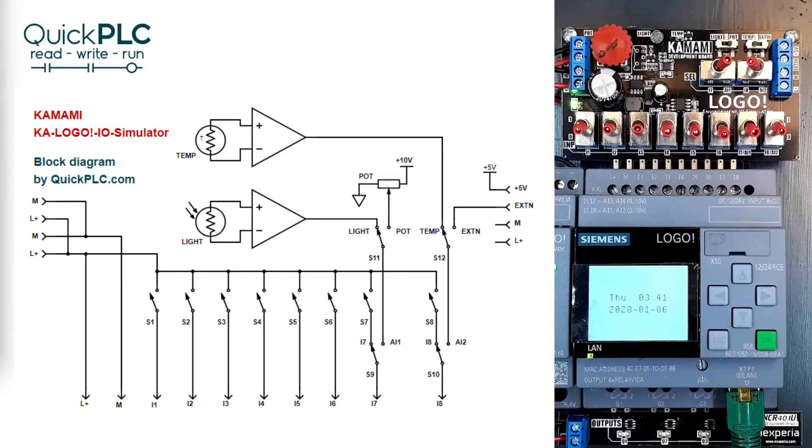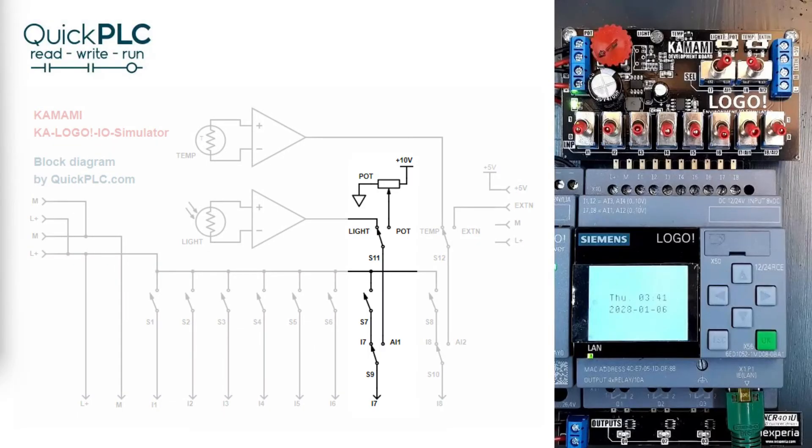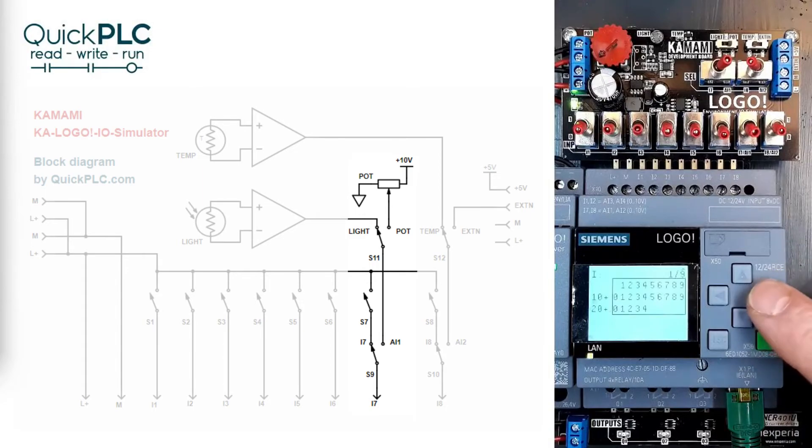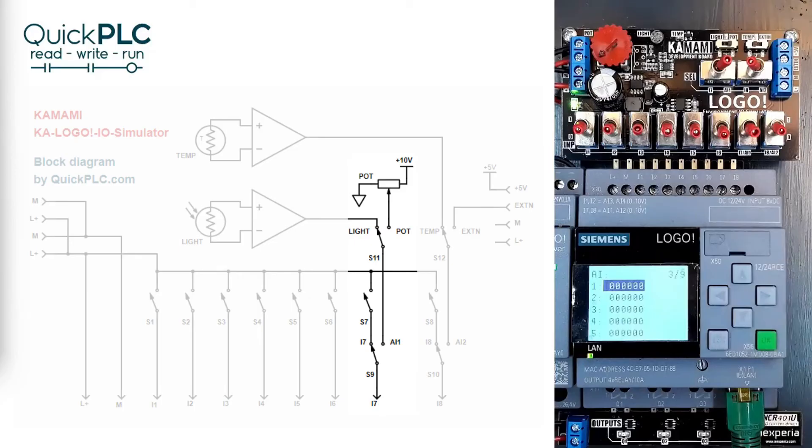Let's have a look at the I.O simulator. We've got input 7 switched to analog AI1 and the source selector is set to pot. We've escaped out to the clock display and pressing the right cursor key we get to the AI monitor and want to monitor AI1. Turning the pot we can see that we get a range of 0 to 1000.